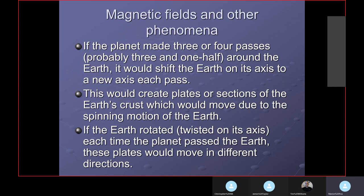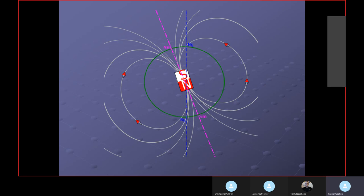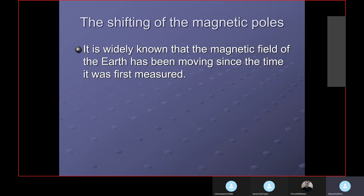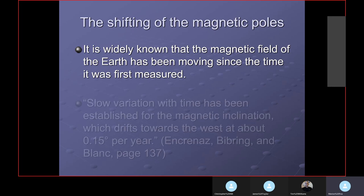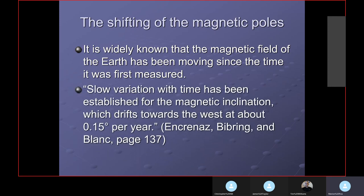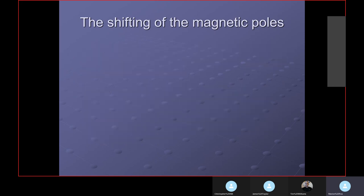The magnetic field of the Earth looks kind of like this, south pole on the top and north pole on the bottom. It is tilted on the axis. It's widely known that the magnetic field of the Earth has been moving since the time it was first measured. Slow variation with time has been established with magnetic inclination, which drifts toward the west at about 0.5 degrees per year.